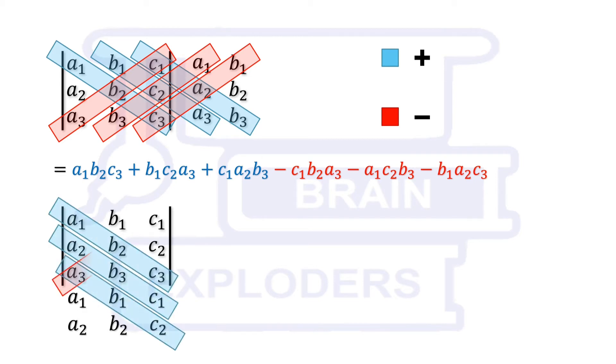You can also use rows in place of columns. The value will remain unchanged.